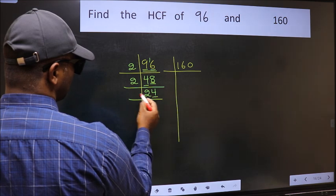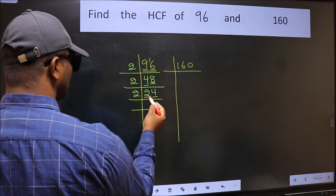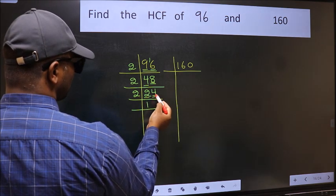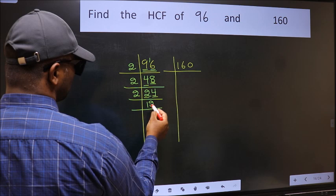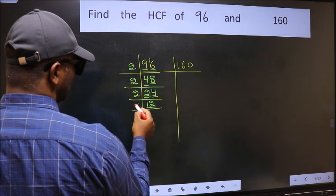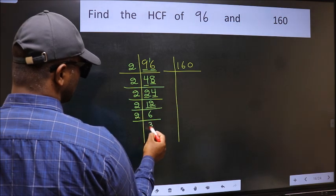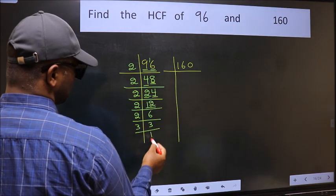Last digit 4 is even so take 2. First number 2, when do we get 2 in 2 table? 2 times 1 is 2. The other number 4, 2 times 2 is 4. Now 12 is 2 times 6. 6 is 2 times 3. 3 is a prime number so 3 times 1 is 3.